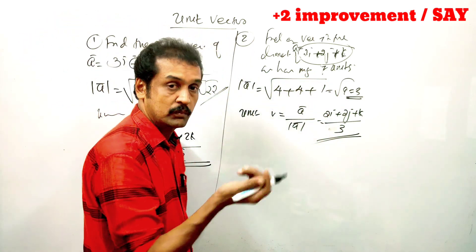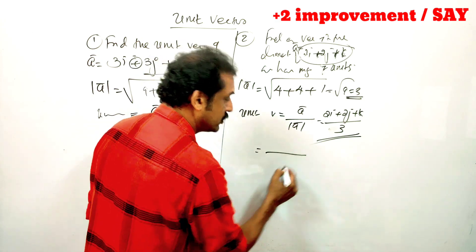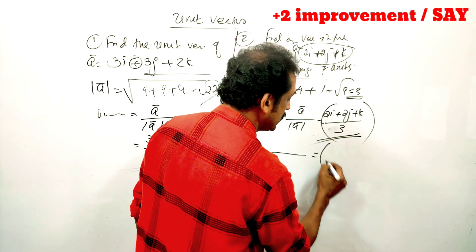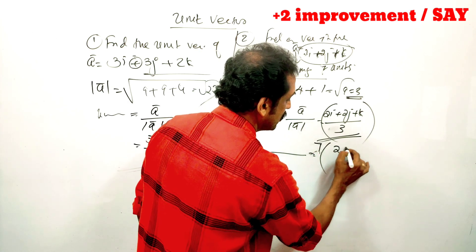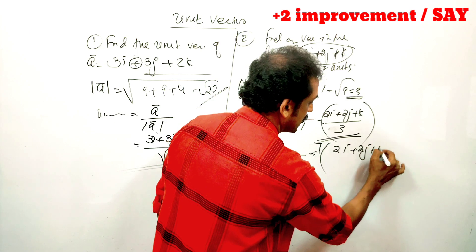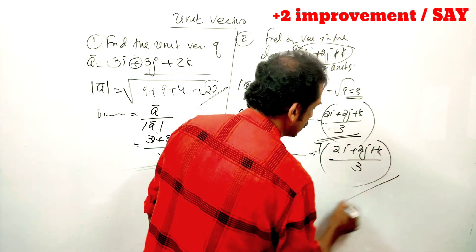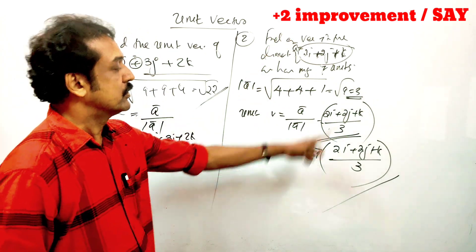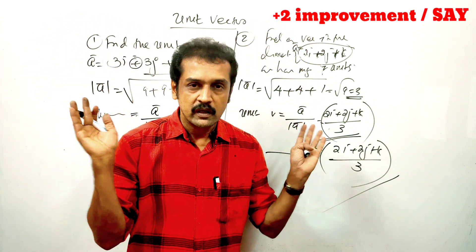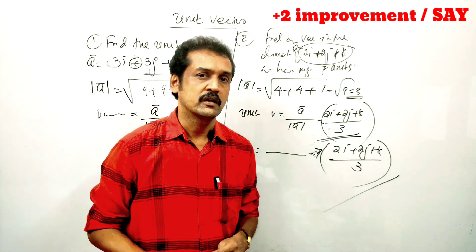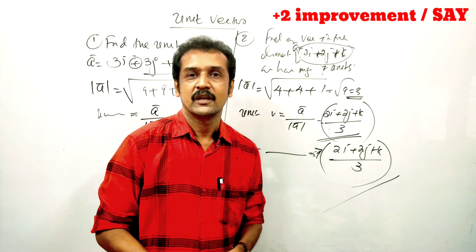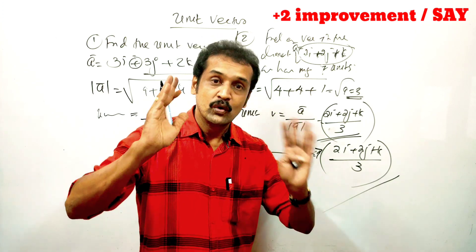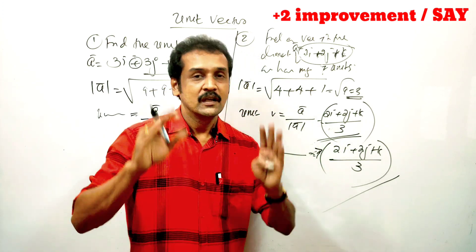Therefore, a vector whose magnitude is 7 units is equal to 7 times the unit vector, which is 7 times 2i plus 2j plus k by 3.